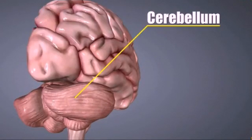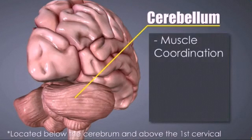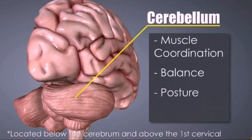The cerebellum is located below the cerebrum and above the medulla oblongata. It coordinates the muscles and muscular movement, and it also helps in the maintenance of our body's balance and posture.